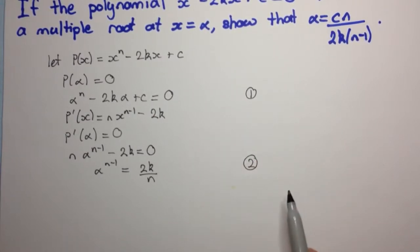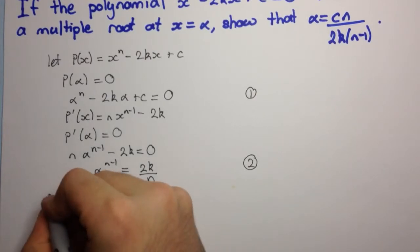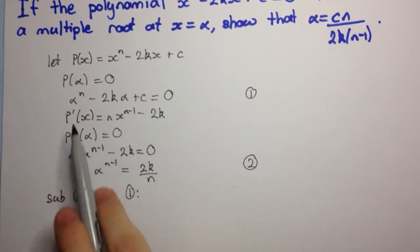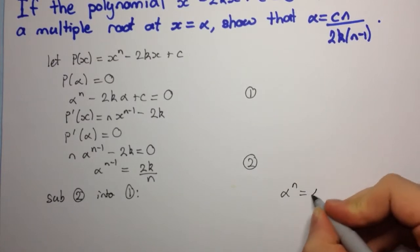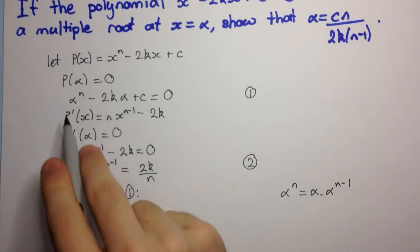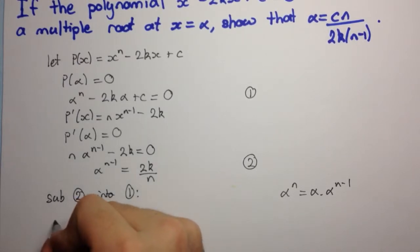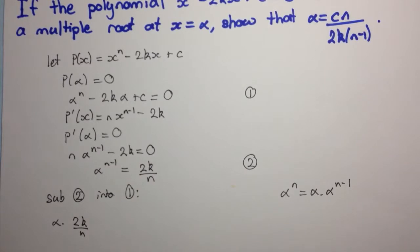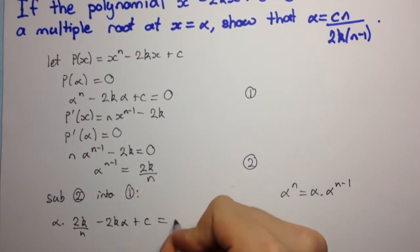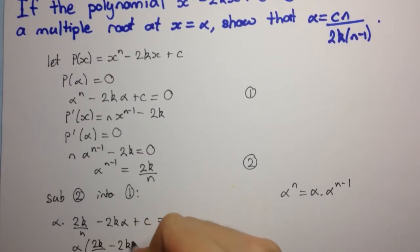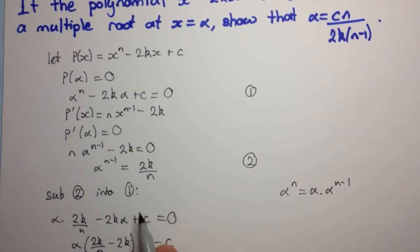Now we substitute equation two into equation one. We can think of alpha to the n as alpha times alpha to the n minus one, which equals alpha times 2k over n. So we have alpha times 2k over n minus 2k alpha plus c equals zero. Taking out a factor of alpha gives us alpha into 2k over n minus 2k, which equals minus c.